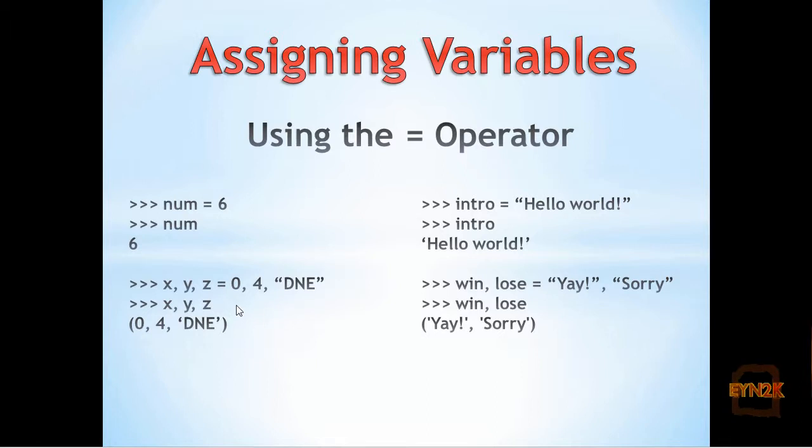When we print back x, y, and z to the console, we get 0, 4, and 'DNE'. This is also an example of multiple assignment on the right here, where we have the variables win and lose assigned to the strings 'Yay!' and 'Sorry'.